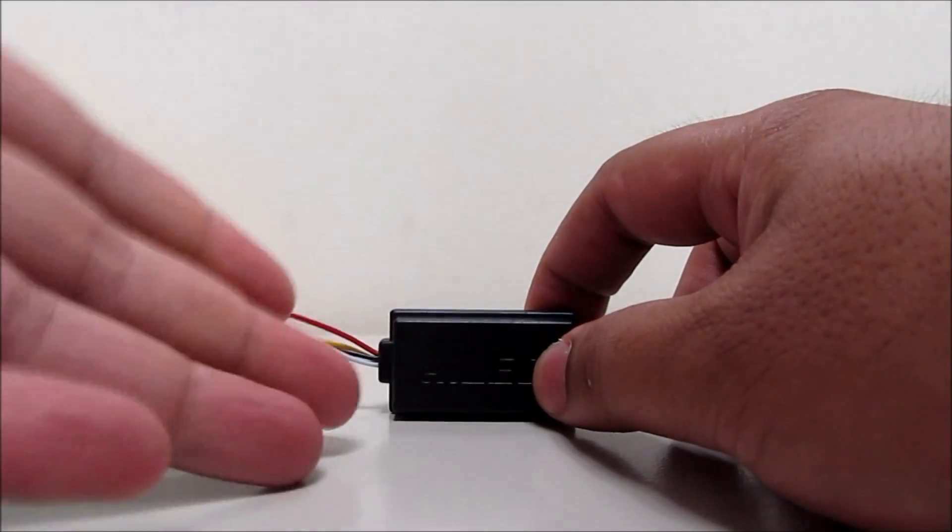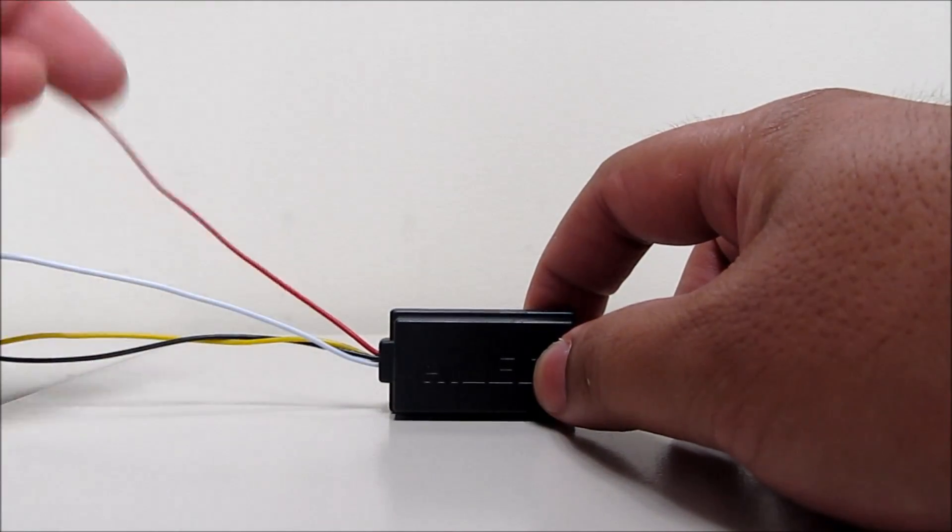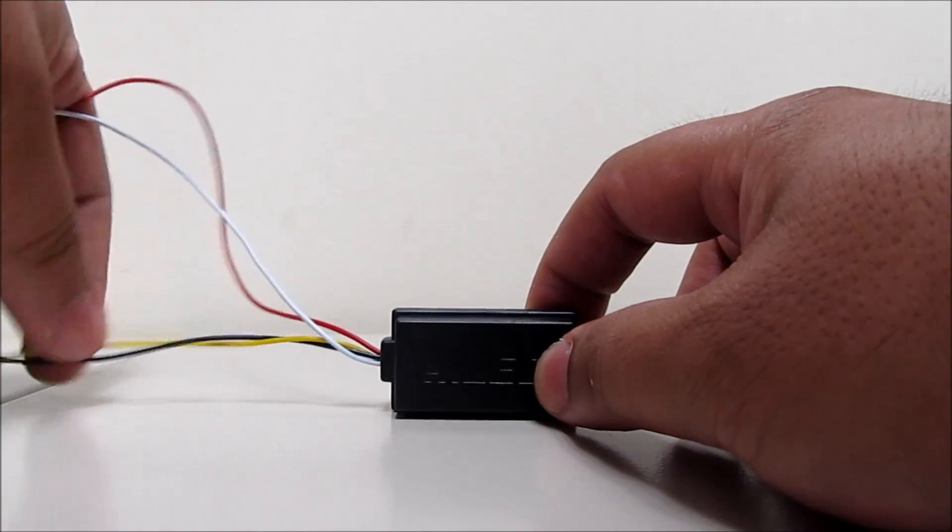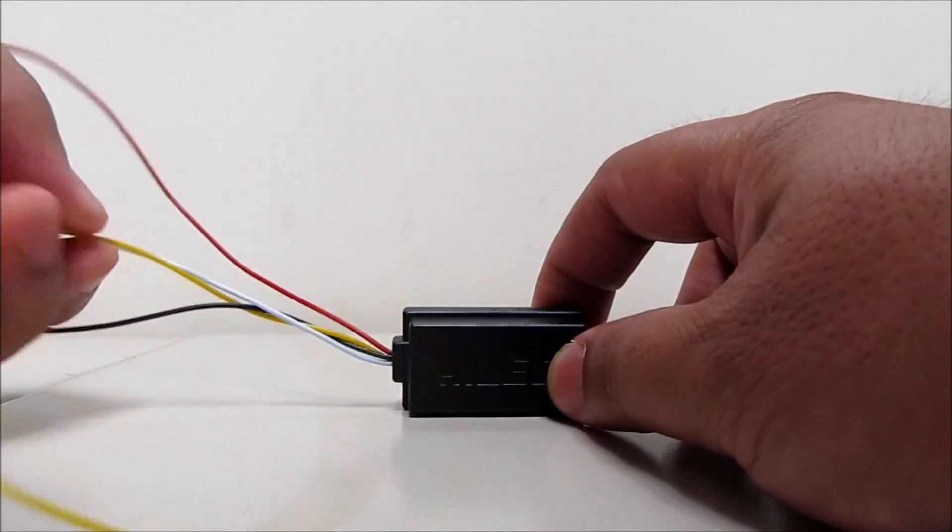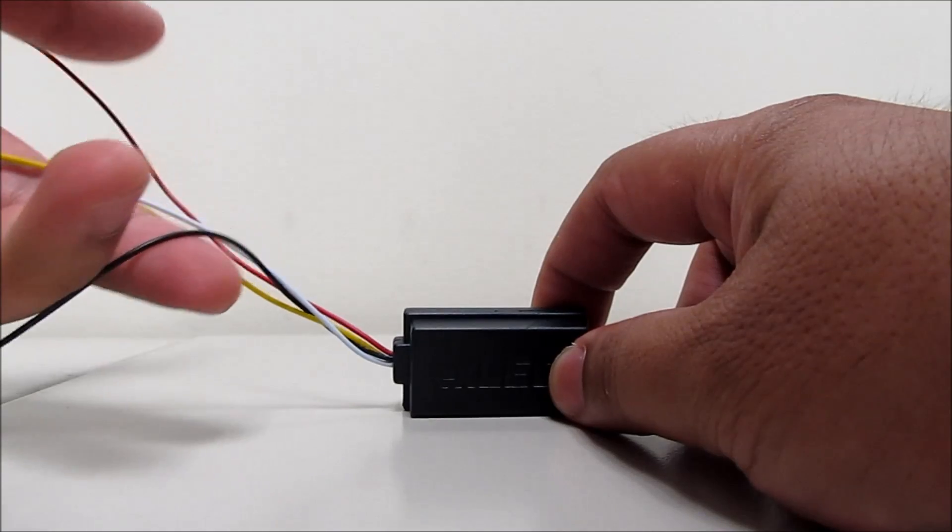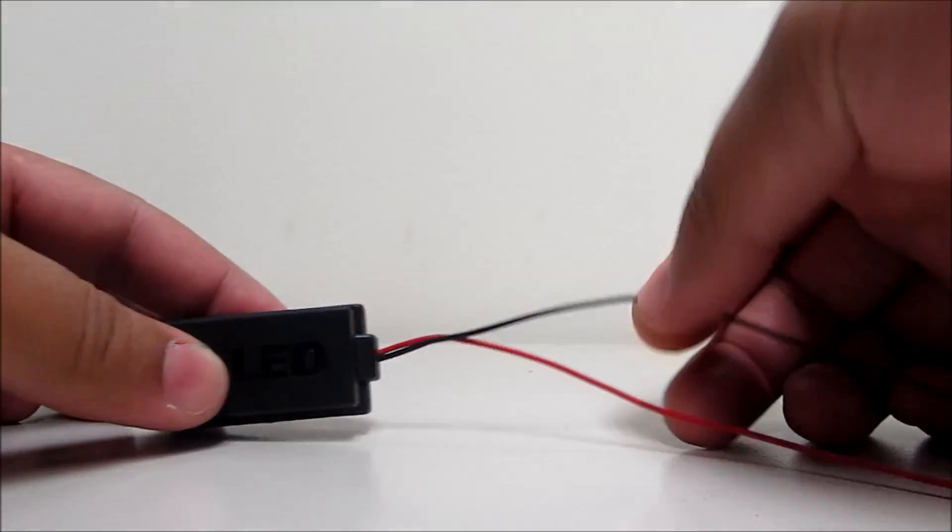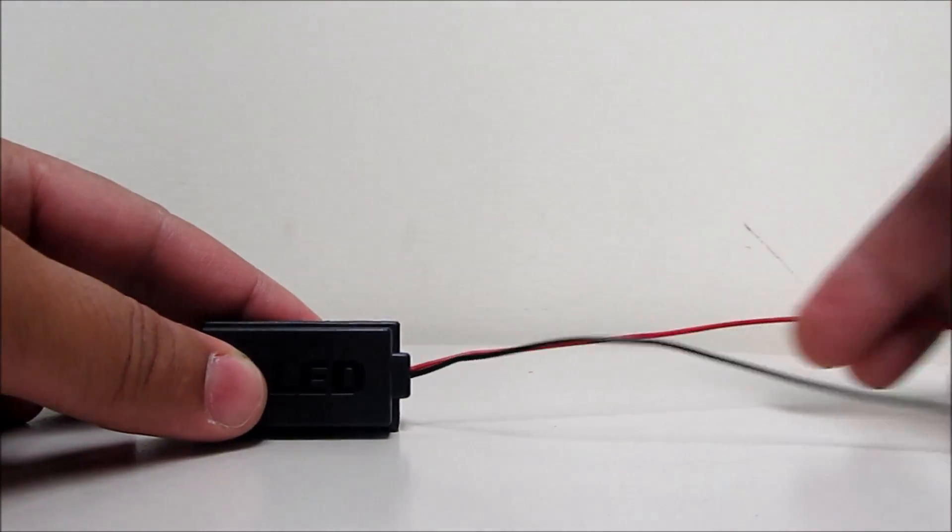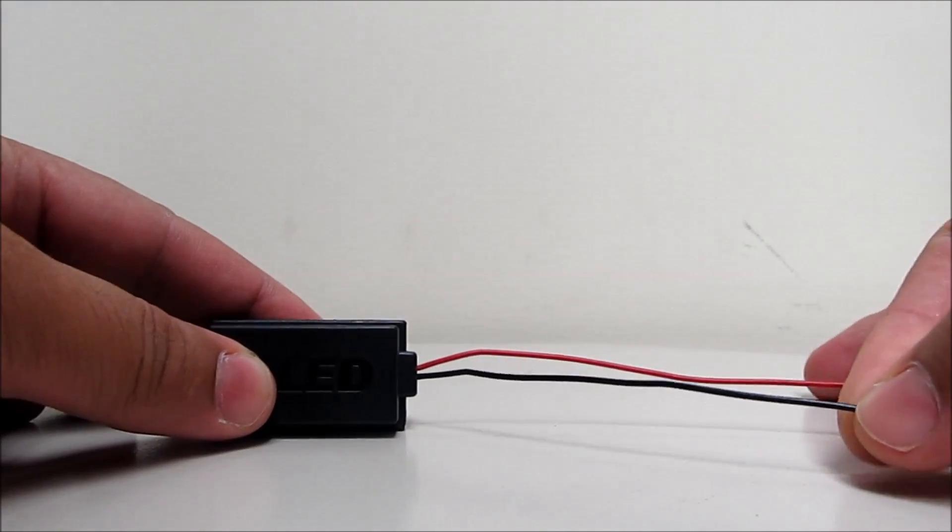And so the red wire right here will be for your brake, white will be for parking, the yellow wire right here is for the turn signal, and black is ground. And for the output, red is power, and black is ground.